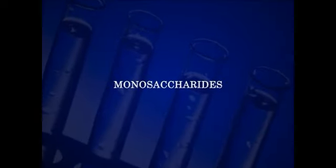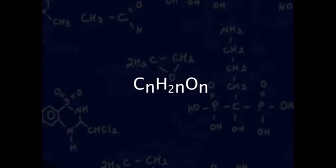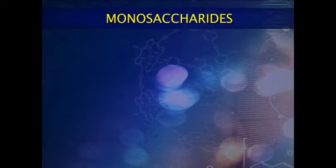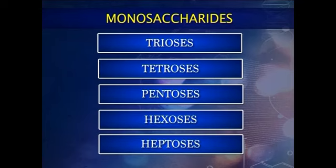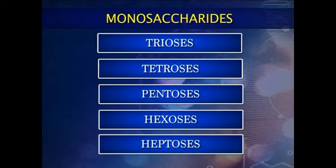Let us discuss about the monosaccharides. The general formula of monosaccharides is Cn(H2O)n. The monosaccharides are divided as trioses, tetroses, pentoses, hexoses, and heptoses depending upon the number of carbon atoms they possess, and as aldoses or ketoses, whether the aldehyde or ketone groups are present.